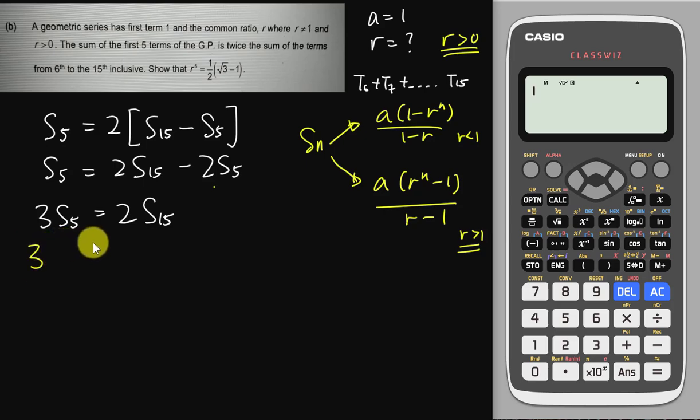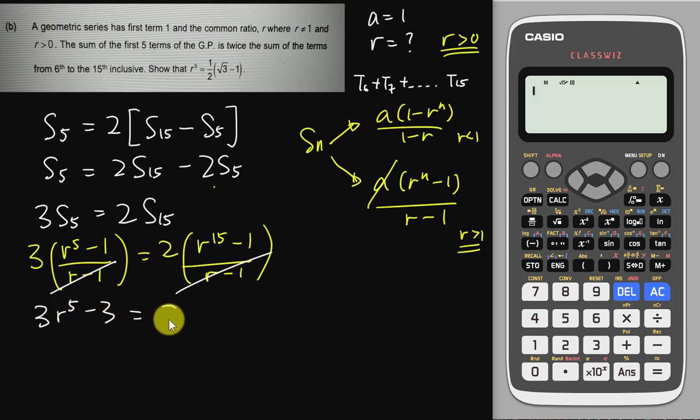So here I have 3S5, since a equals to 1 so I can just ignore all the a here because 1 multiplied by the whole thing I'm still getting back the 1 here. So here I have (r^5 - 1) over (r - 1) and it equals to 2 times (r^15 - 1) over (r - 1). Definitely the first step I will do here is I will just multiply r minus 1 for both sides. I get rid of r minus 1 and then I expand it. So this is 3r^5 minus 3 equals to 2r^15 minus 2. And I see this one is sort of a quadratic or cubic equation. So what I will do is I will group everything to one side see what I can do next. So this one I should have 2r^15 minus 3r^5, this one is minus 3 plus 3 so it will become plus 1.